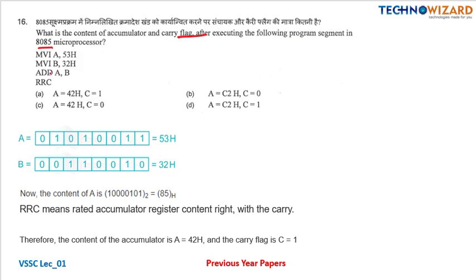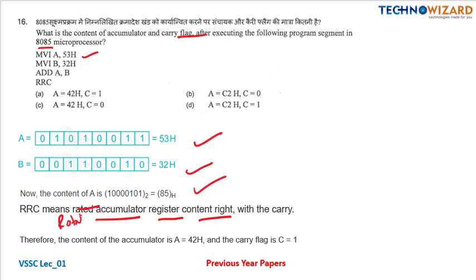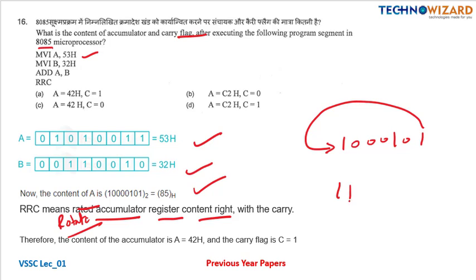Question number sixteen: 8085 microprocessor programming. MVI A, 53H moves 53H into accumulator: binary 01010011. MVI B, 32H loads B with 32H. ADD B adds A and B giving 85H. RRC rotates the accumulator right with carry. After rotation, A equals 42H and the carry flag is 1. Option A is the correct answer.